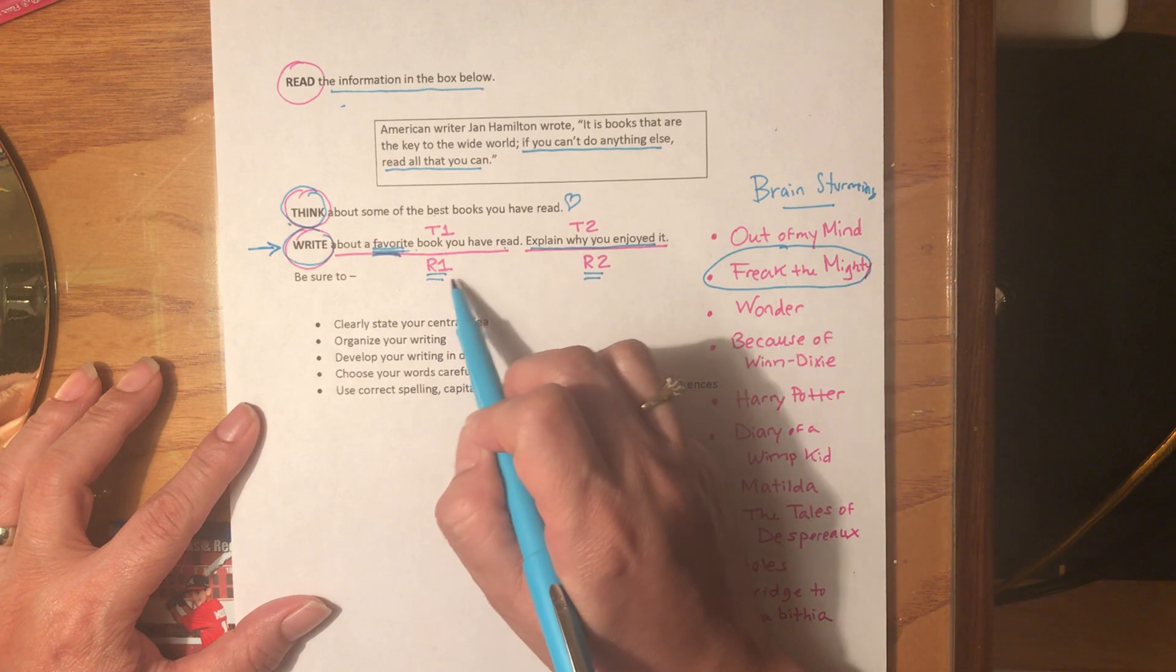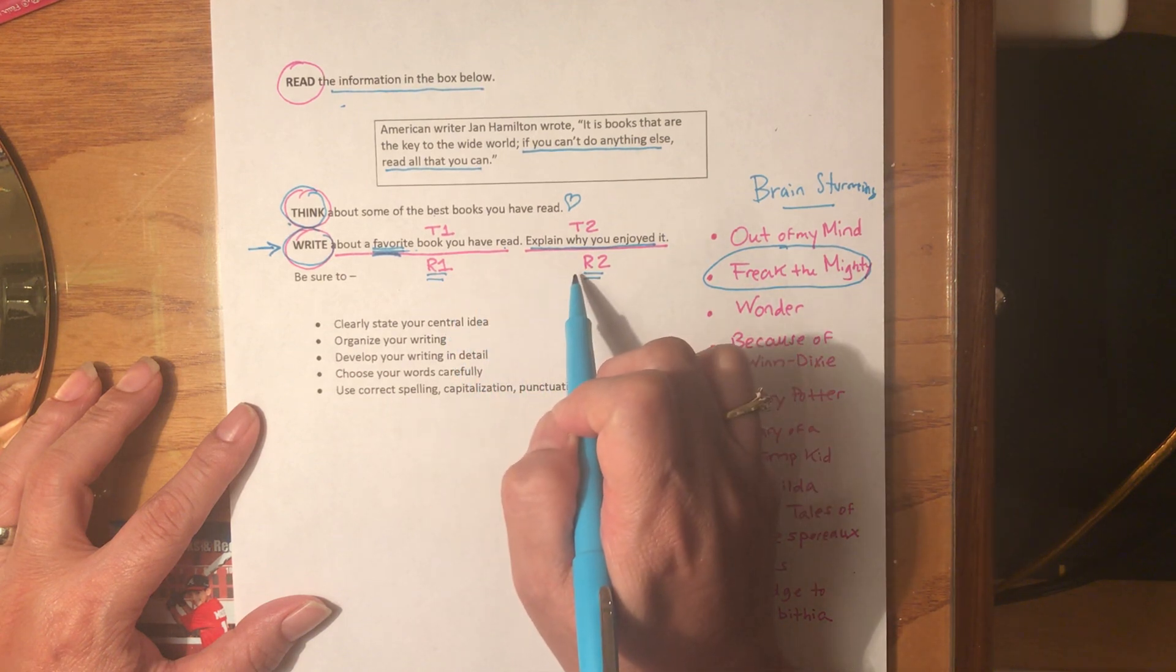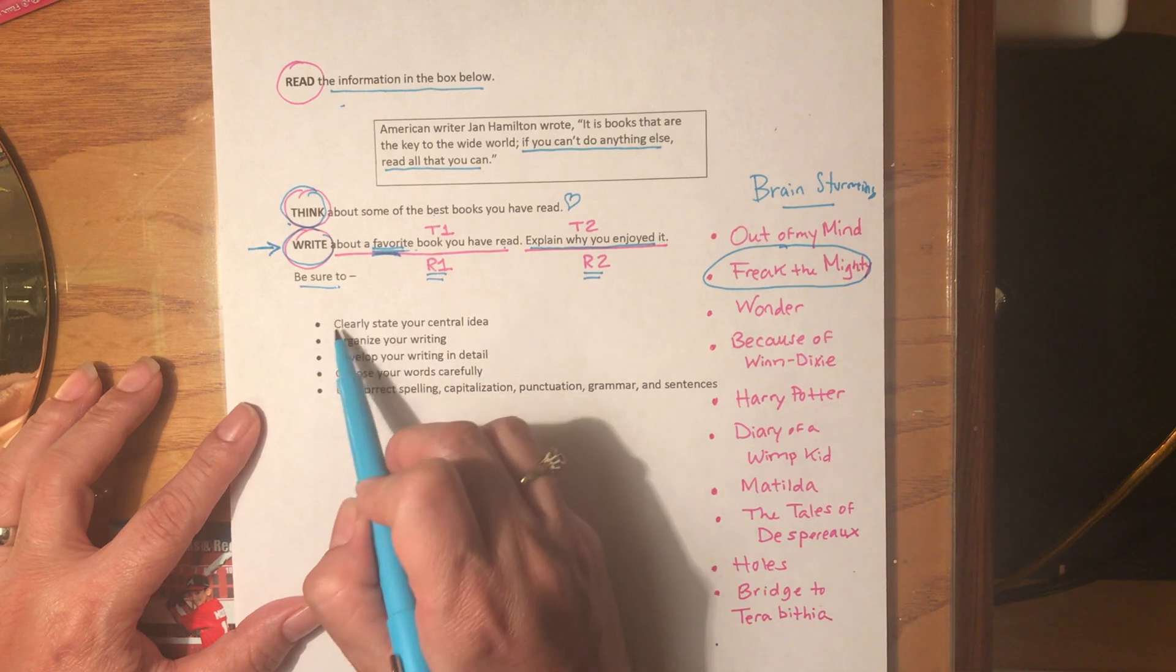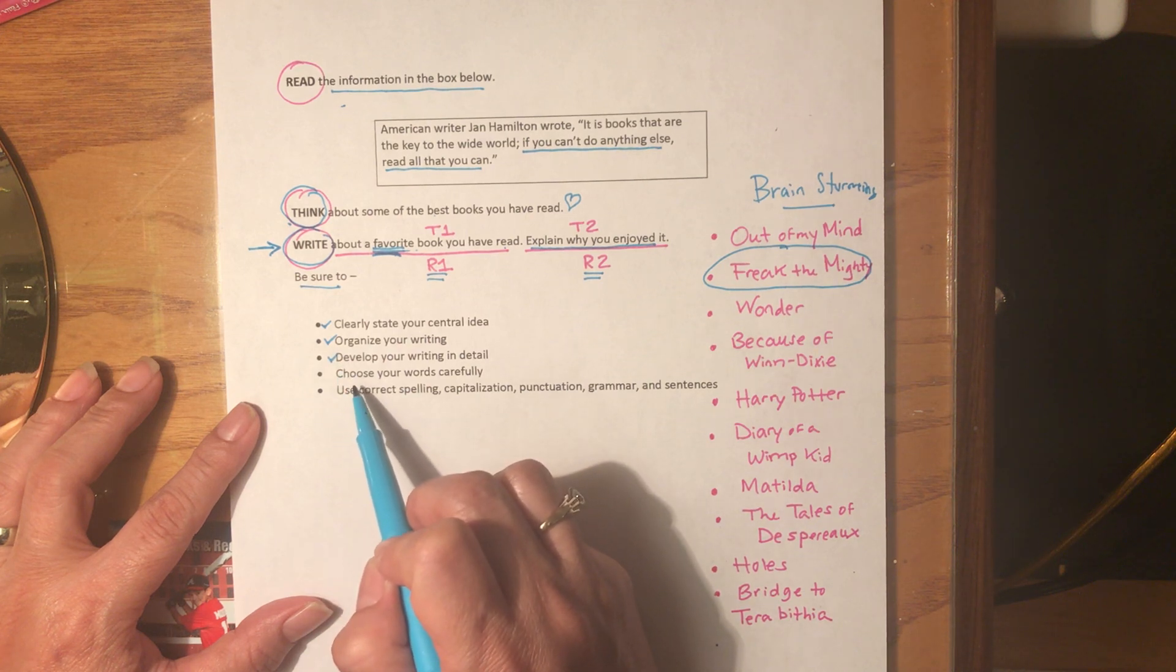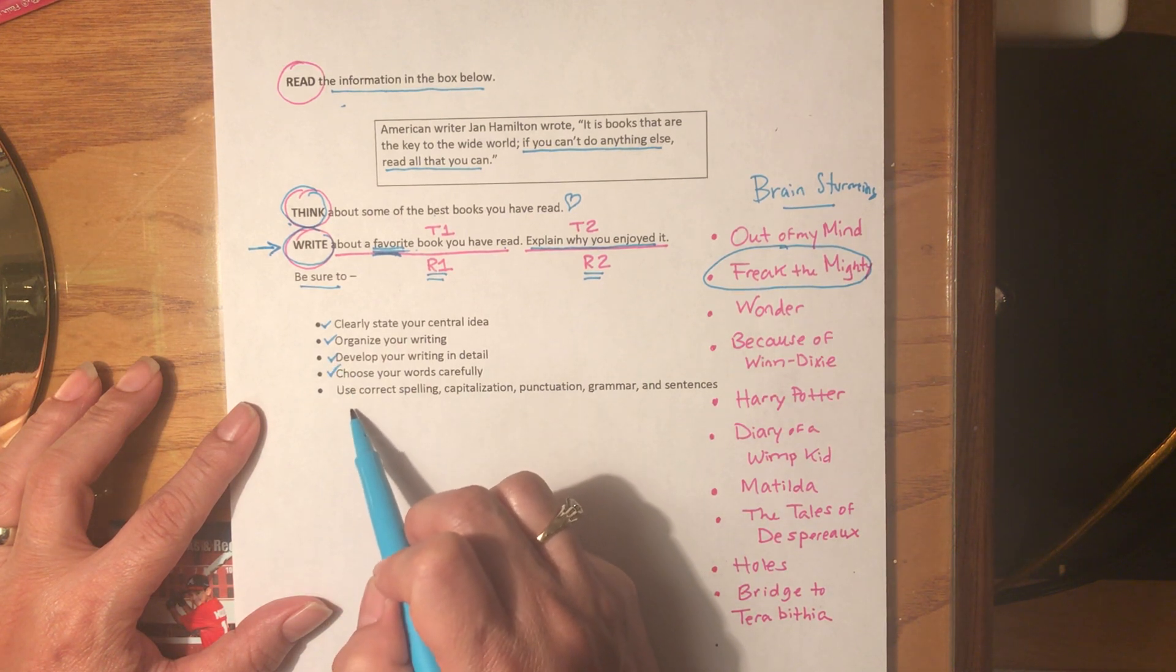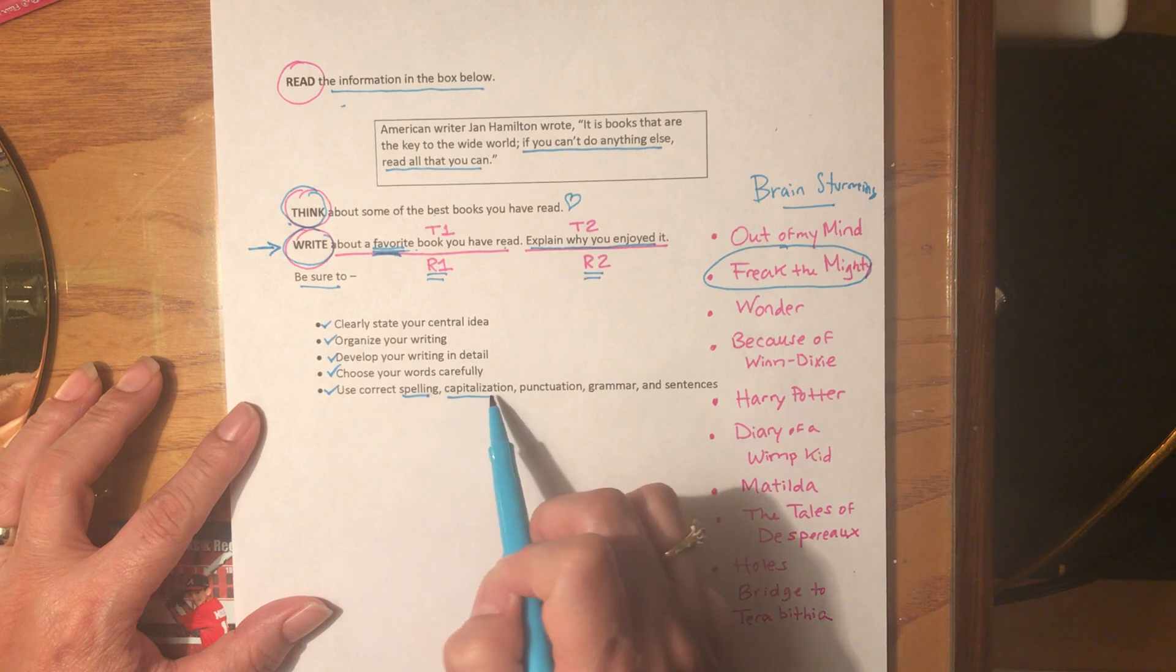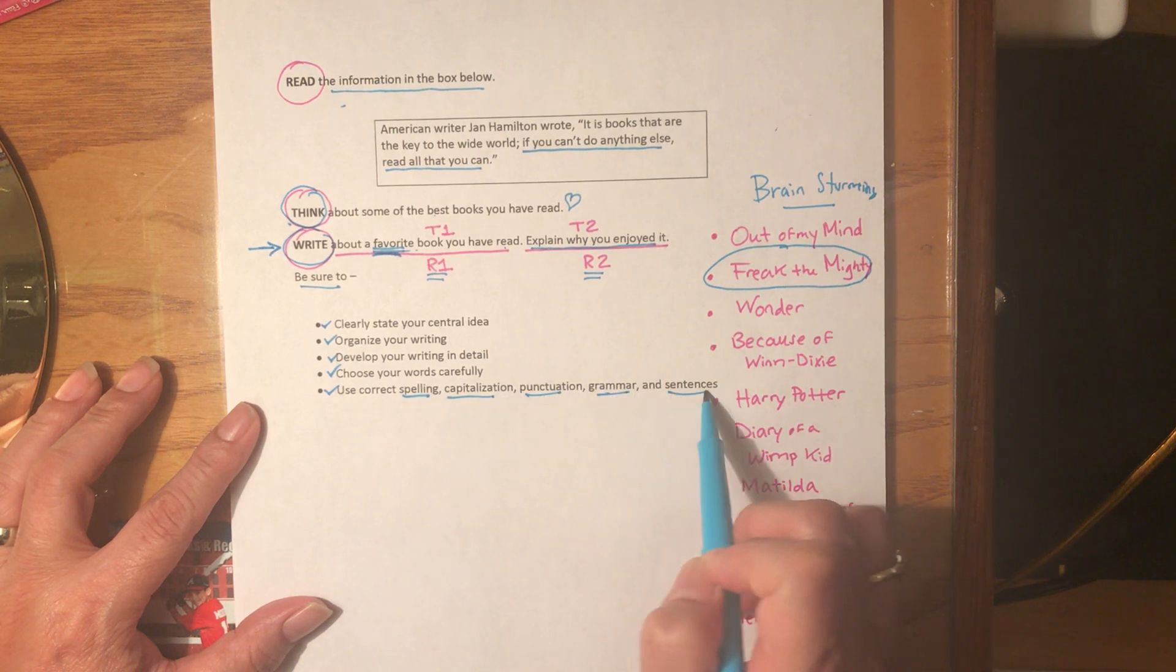Make sure that you clearly state your central idea, organize your writing, develop your writing in detail, choose your words carefully, and use correct spelling, capitalization, punctuation, grammar, and sentences.